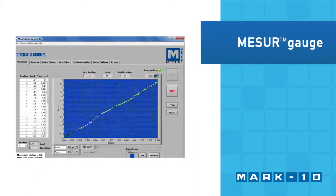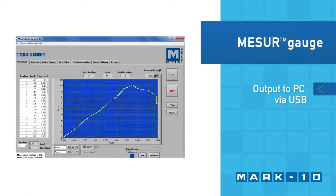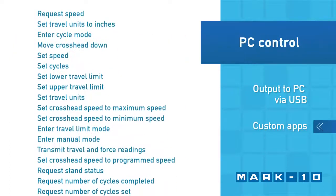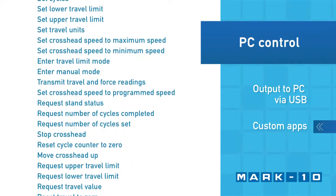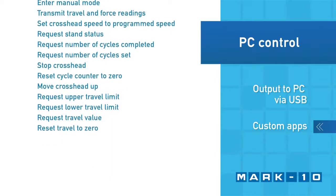Force and distance data can be output to a PC via USB for graphing and reporting. Custom applications can also be developed utilizing the ESM303's ASCII command set.